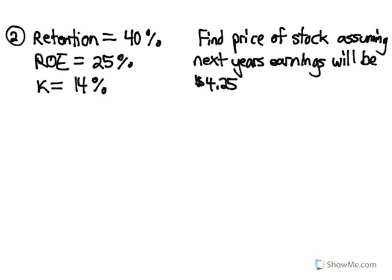As soon as we see 'price of stock,' we want to think dividend discount model. We're not given next year's dividend, but we are given next year's earnings. How much of those earnings will be paid out as a dividend? $4.25 is earned; 40% is going to be retained, so 60% will be paid out as the dividend. That gives us $2.55, which will be next year's dividend, D1.